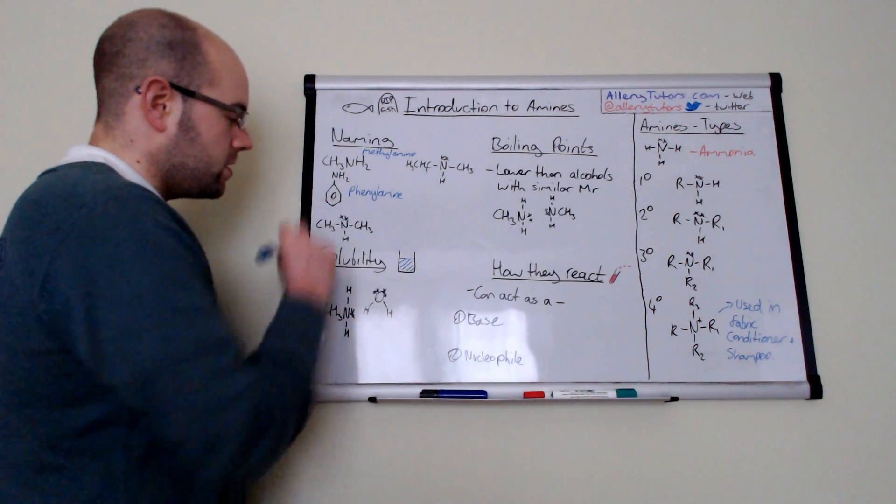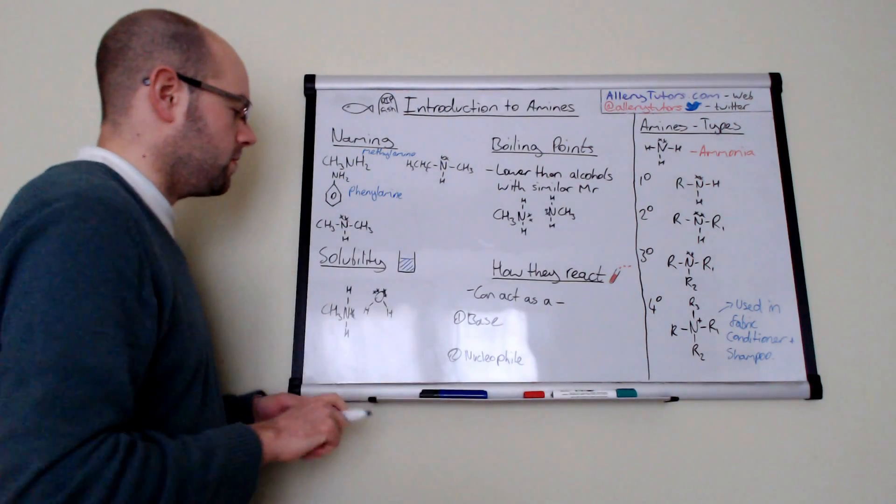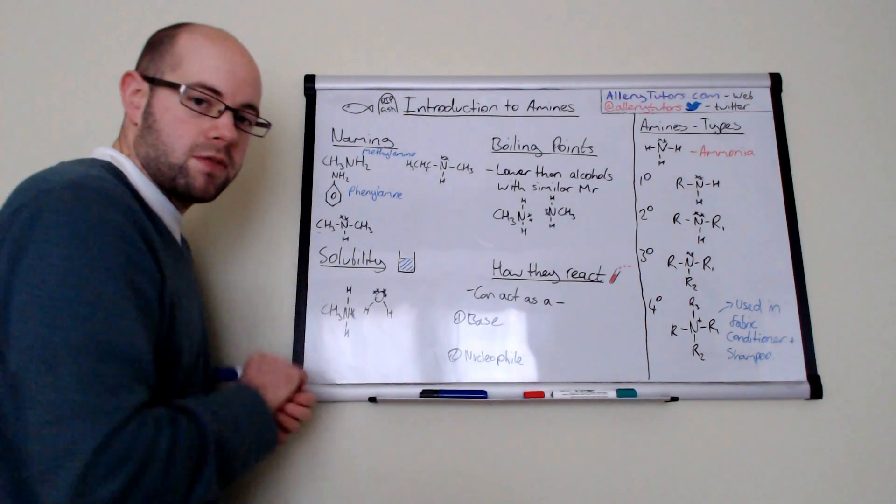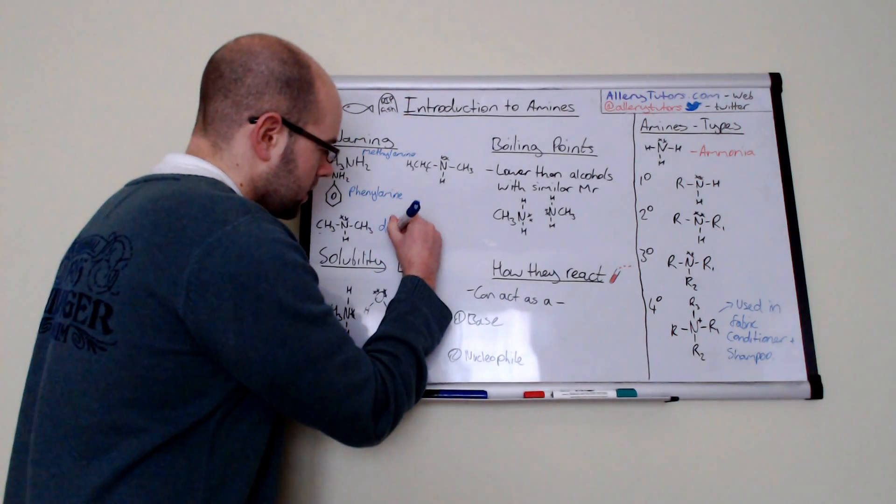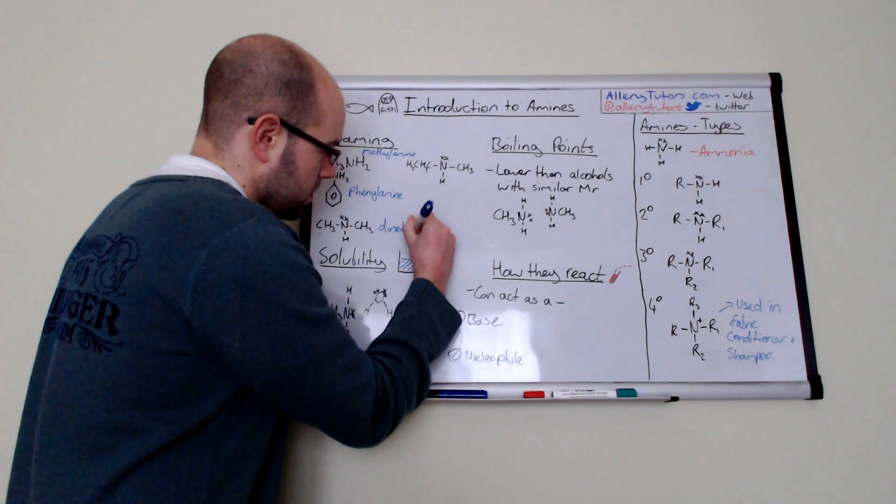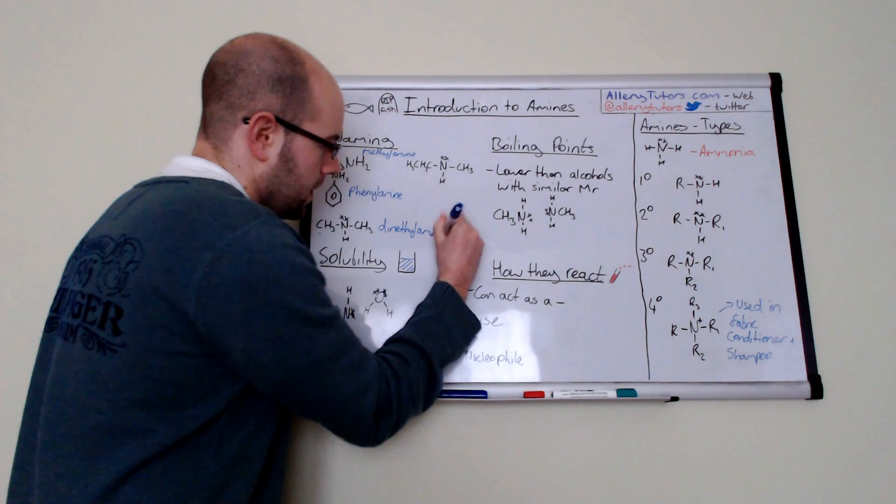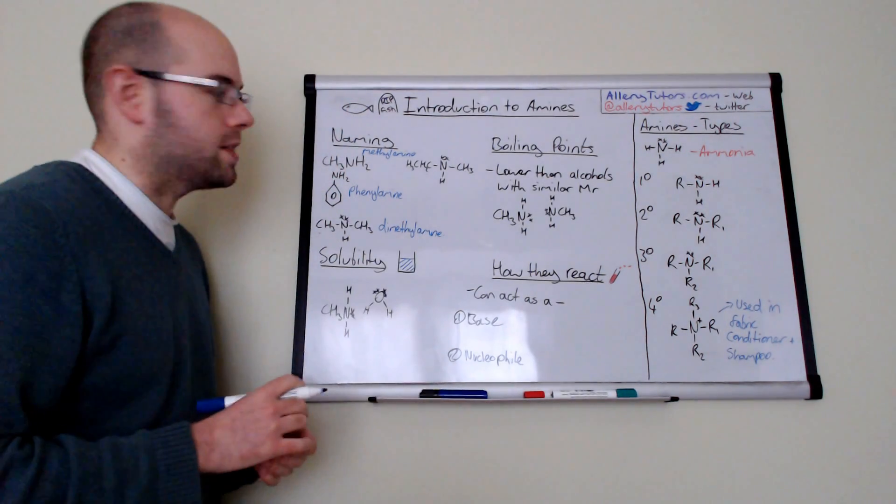And this is a slightly different one. This is a secondary amine as we've seen over here. We've got two CH3 groups either side. So we're going to call that dimethyl. So that's the groups that we've got and we just put amine on the end. And it's as simple as that. They're really easy to name.